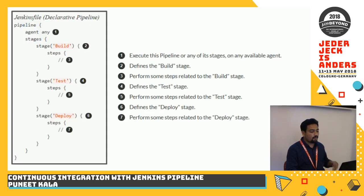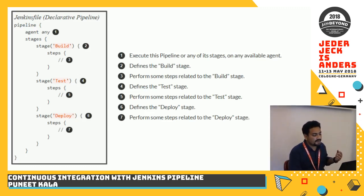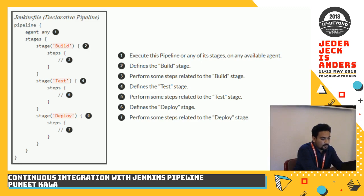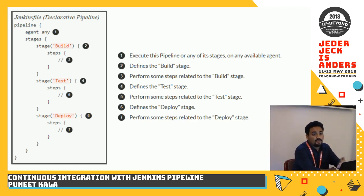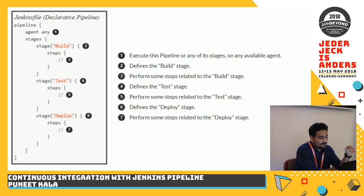What is a declarative pipeline? If you look at this example, whenever you have a Jenkinsfile with declarative pipeline, Jenkins reads it as it is. Starting with agent — when you mention 'agent any', it knows the pipeline can be executed on any available node. The first stage Jenkins is supposed to run is 'build'. Once it gets into the build stage, there are several steps you define — maybe a checkout or pulling another repository. The next stage is 'test', and once the build stage is successful, Jenkins goes to the test stage and executes those steps.